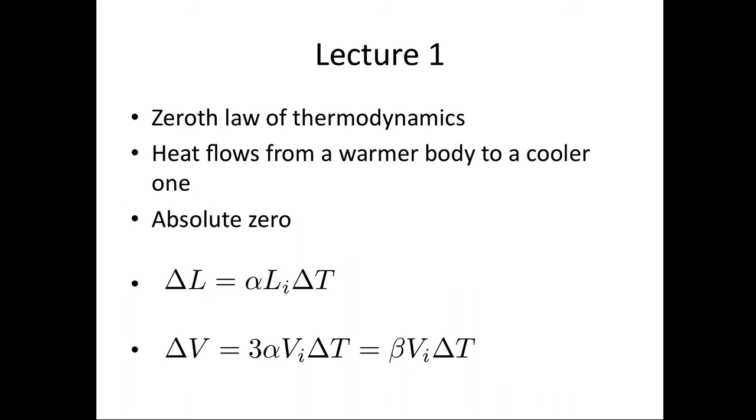We also met the formula for length contraction and expansion. The change in length of an object is equal to α, the expansion coefficient, Li ΔT, where this is the change in the temperature and this is the initial length. We then showed that for a volume of a substance, the change in volume equals 3α times the initial volume times the change in temperature, where α is the linear expansion coefficient. For liquids, it doesn't make sense to talk about a linear expansion coefficient, so instead we have β, the volume expansion coefficient. To work out the change in volume of a liquid, we use the volume expansion coefficient times the initial volume times the change in temperature.